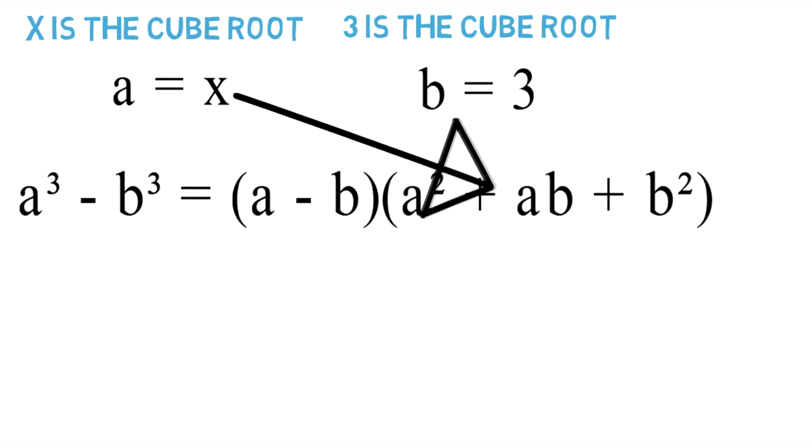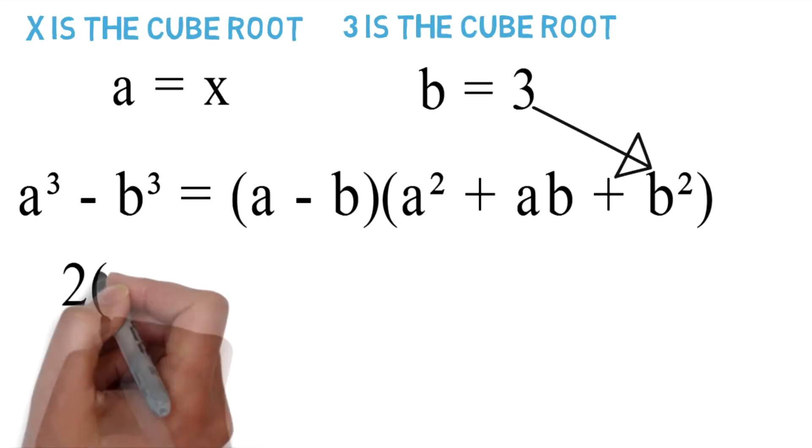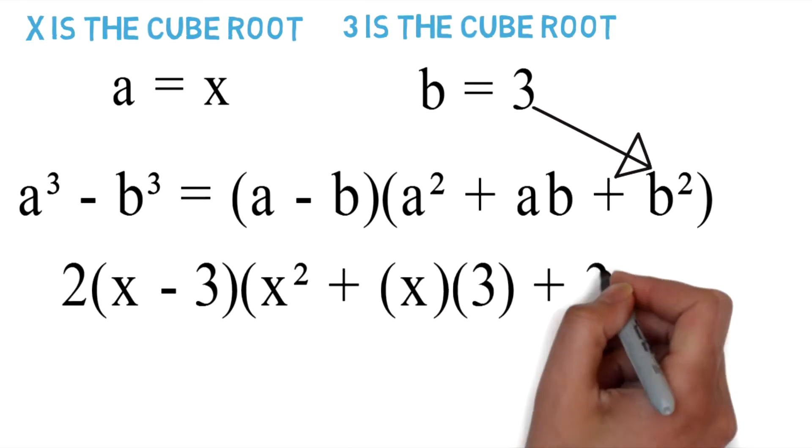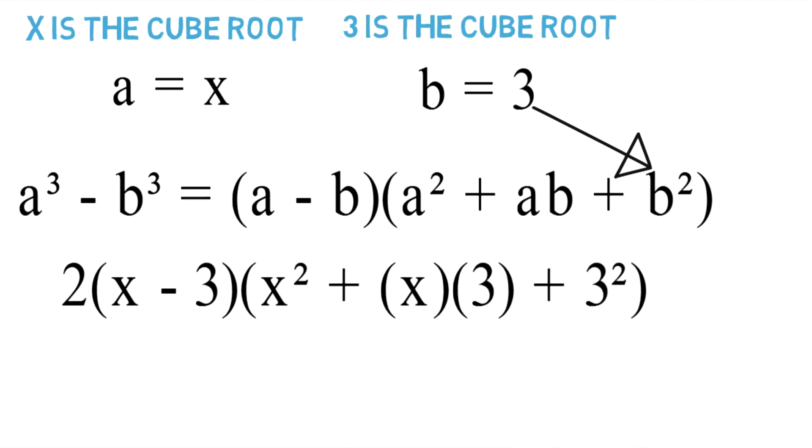Plug it in there, plug it in there, plug it in there. And we'll do the same thing with the b - plug it in there and there and there. And you wind up with 2 times x minus 3 times x squared plus x times 3 plus 3 squared.